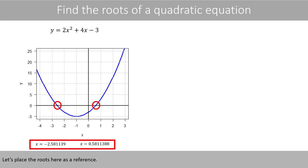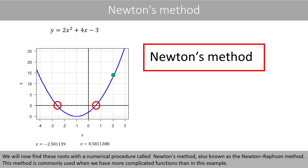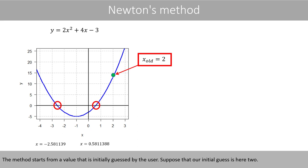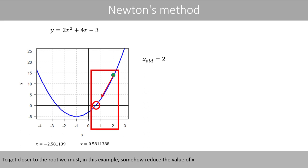We will now find these roots using the numerical procedure called Newton's method, also known as the Newton-Raphson method. This method is commonly used when we have more complicated functions than in this example. The method starts from a value that is initially guessed by the user. Suppose that our initial guess is 2. To get closer to the root, we must somehow reduce the value of x.